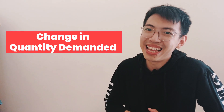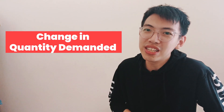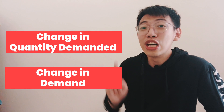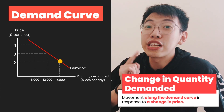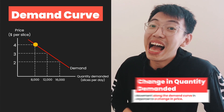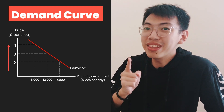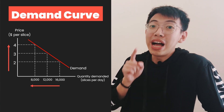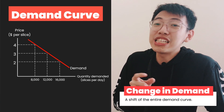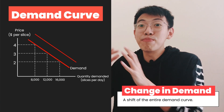Now, there are two terms you need to distinguish: change in quantity demanded and change in demand. Those two terms look similar but are different. Change in quantity demanded means movement along the demand curve in response to a change in price. As the price increases, the quantity demanded — not demand — will decrease. A change in demand is a shift of the entire demand curve.